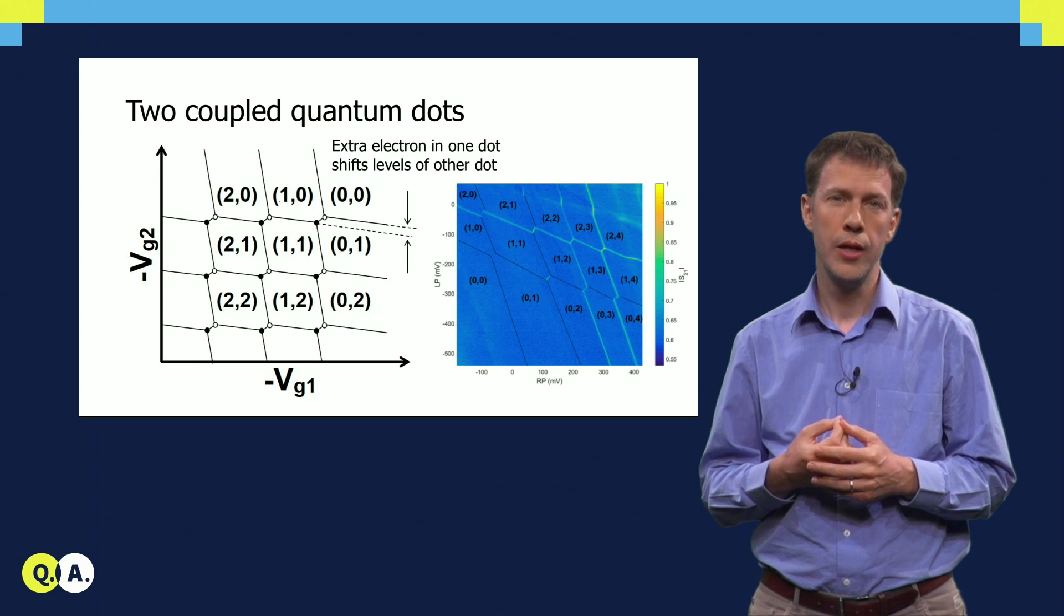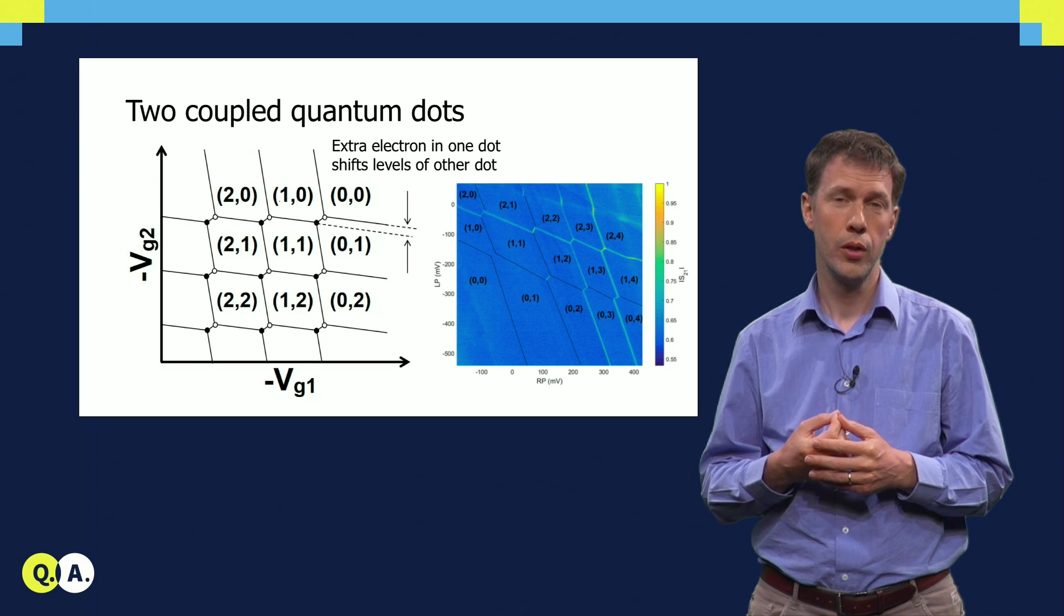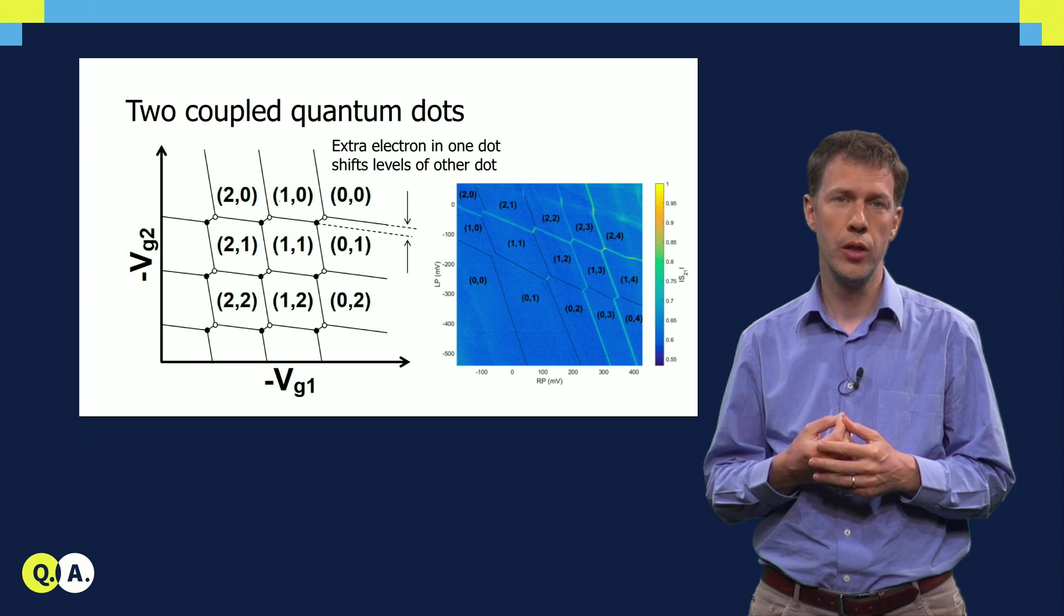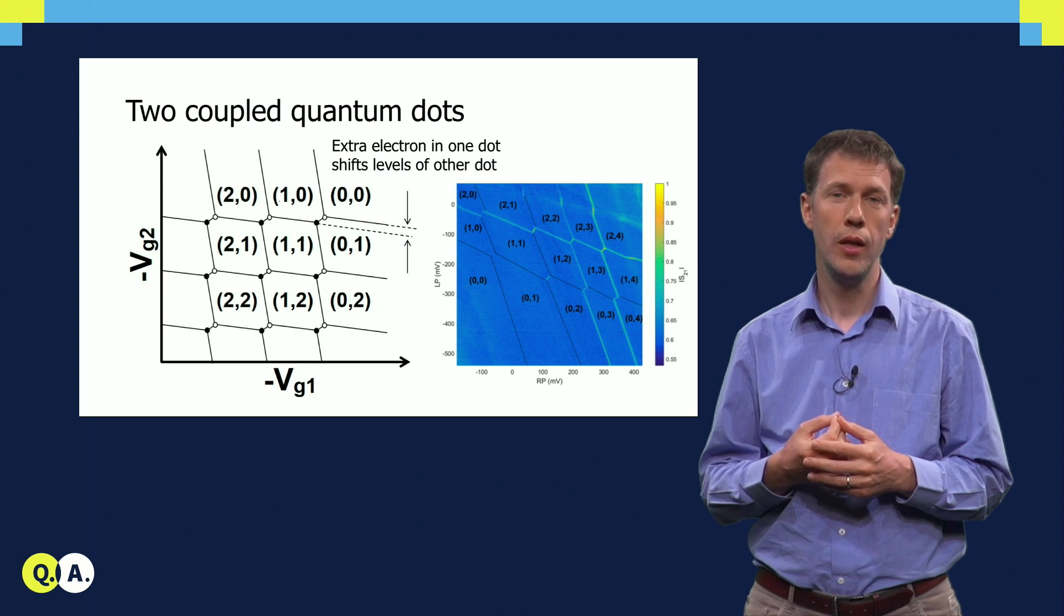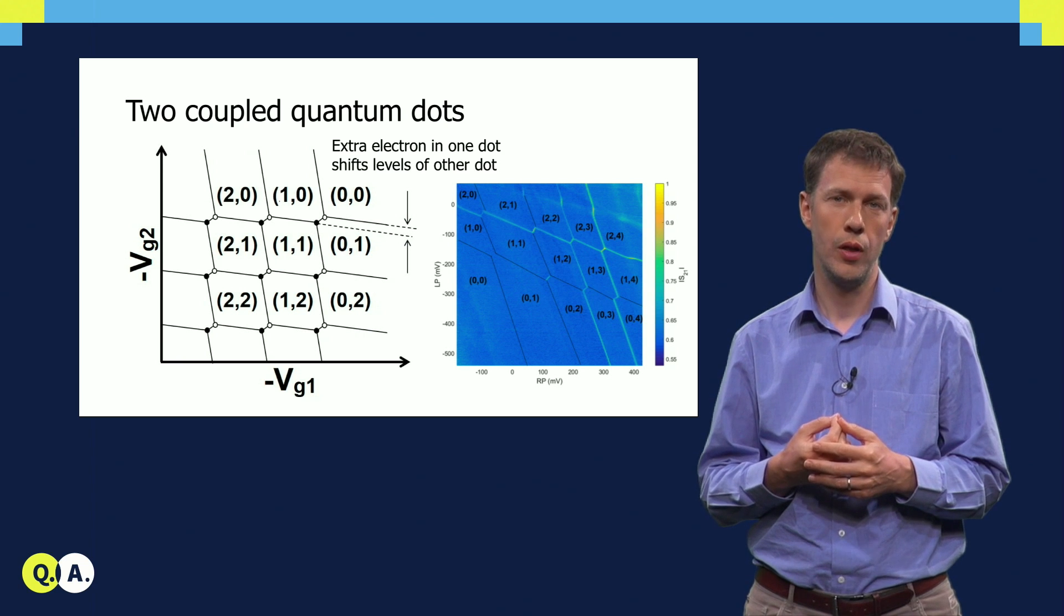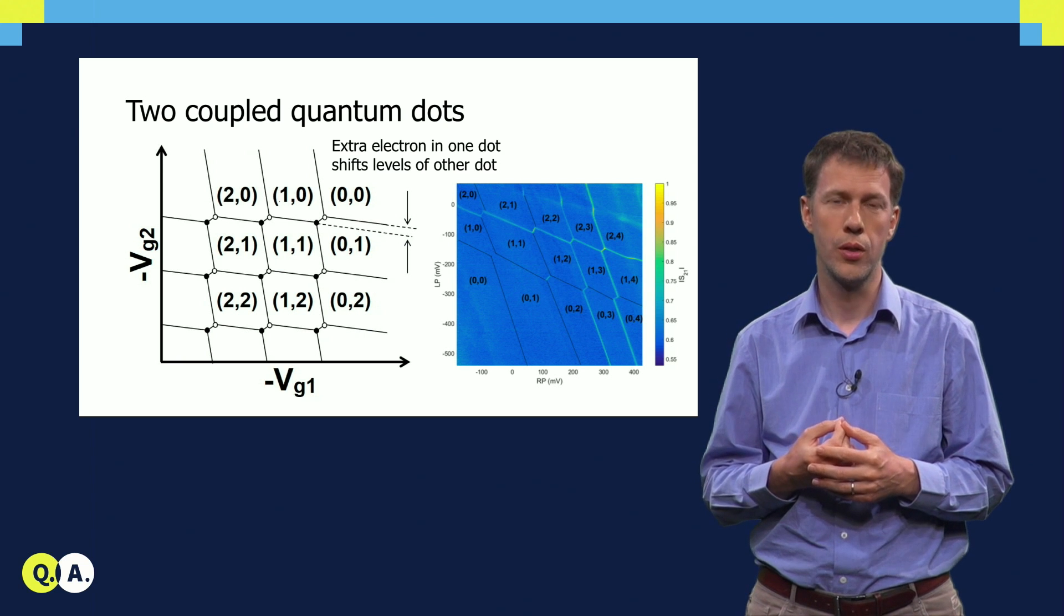A second effect is that the change in the number of electrons in one quantum dot changes the alignment of the levels in the second quantum dot, which is seen in the diagram as discrete shifts in the position of the charge transitions.